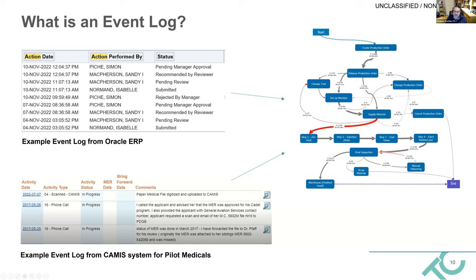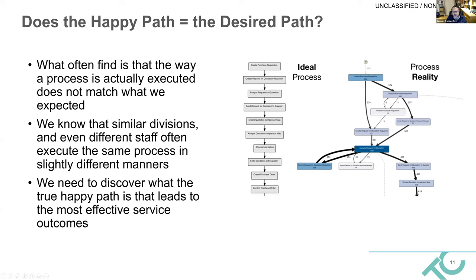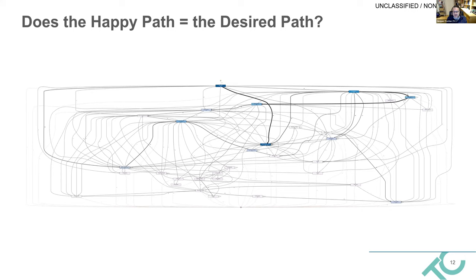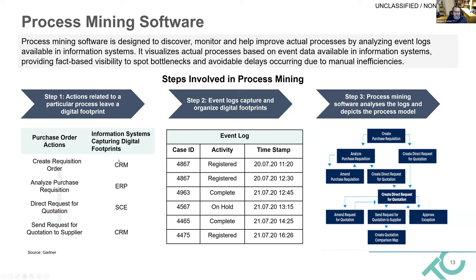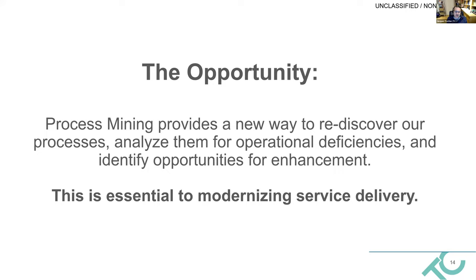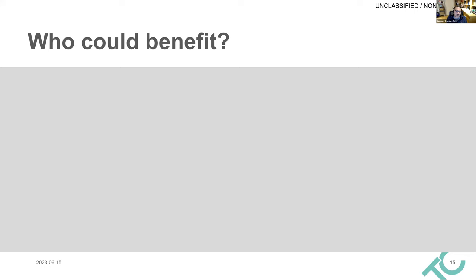Using timestamps from event logs, we can generate process maps that reveal how long it takes to get from step A to step B, where bottlenecks might be, and how to address them. Often, what we think is happening and what's actually happening are two different things — similar divisions might be executing steps differently to achieve the same outcome. In the worst cases, you end up with 'spaghetti diagrams' that don't paint a clear picture of service delivery.